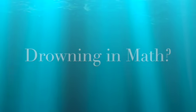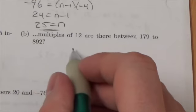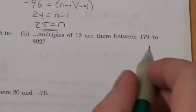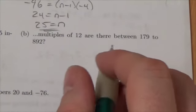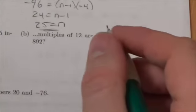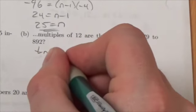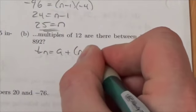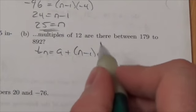Alright, question 9b: How many multiples of 12 are there between 179 to 892? When we're talking about multiples of numbers, this is an arithmetic sequence, so tn equals a plus (n minus 1) times d. In this particular case, the d value is going to be 12.